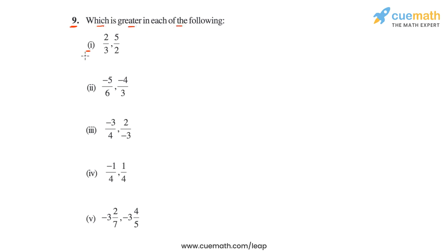In part one, the two rational numbers are 2/3 and 5/2. Both of them are positive. One option is to compare them directly by observing their magnitudes — 2/3 is less than 1 and 5/2 is greater than 1, so clearly 5/2 must be greater. But let's do this comparison by converting both rational numbers to equivalent rational numbers with the same denominator. So the LCM of the denominators 3 and 2 is 6.